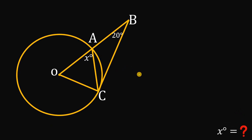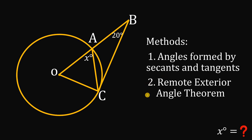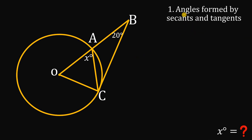To answer this question, I'll use two different methods. The first method uses angles formed by secants and tangents. The second method uses the remote exterior angle theorem. For method one, we extend segment OB to form a diameter, calling the new endpoint D. So we have diameter AD.